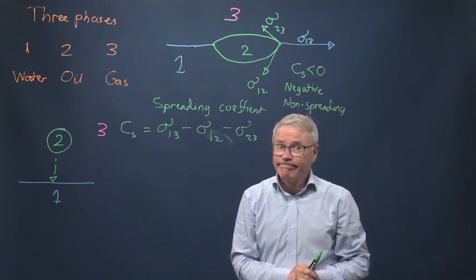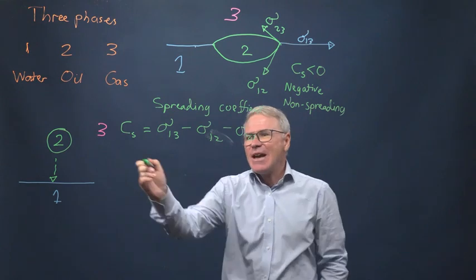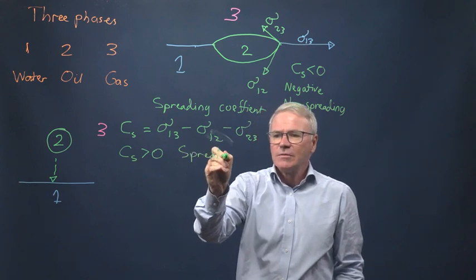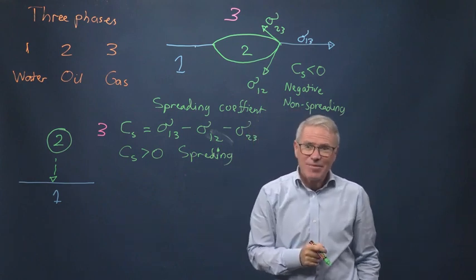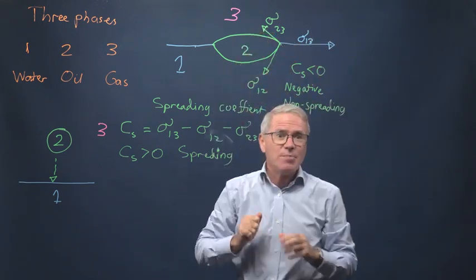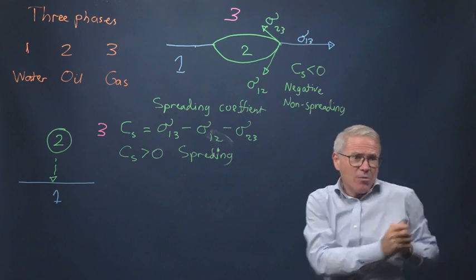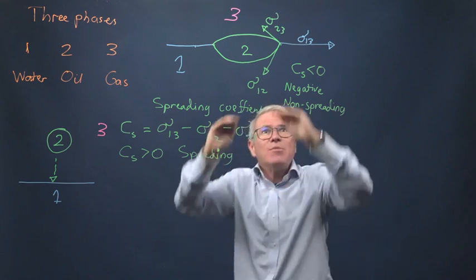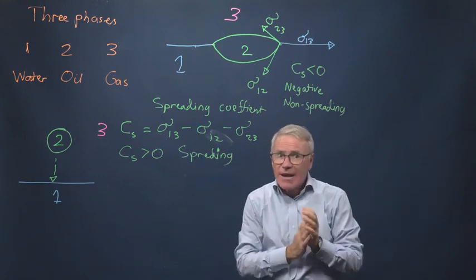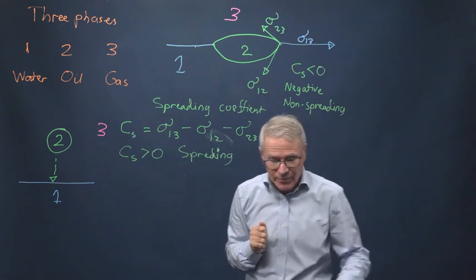But oil can spread on water, so what happens when it does? In this case, Cs is greater than zero — a spreading oil. This interfacial tension is bigger than those two, so it's dragging the oil across the surface. What that means is it's actually thermodynamically more stable for the bare water-gas interface to be coated with oil. Classically, this continues to spread until you've got a molecular layer of oil across the surface.